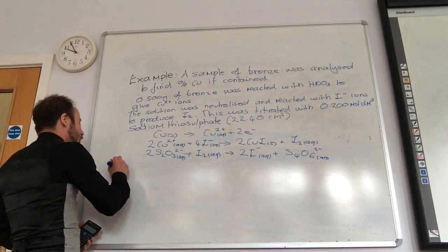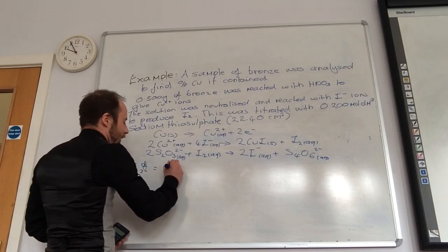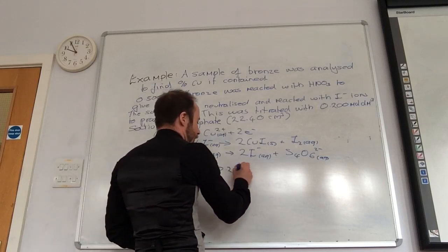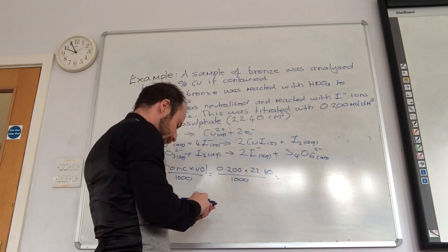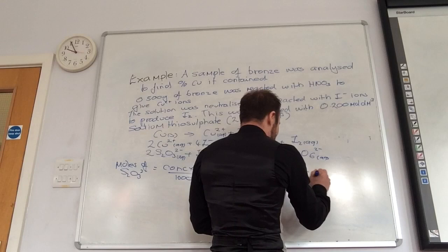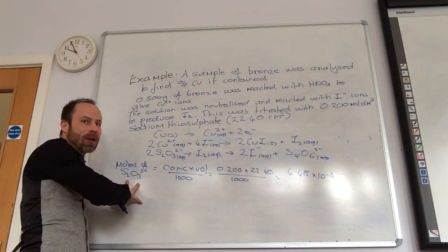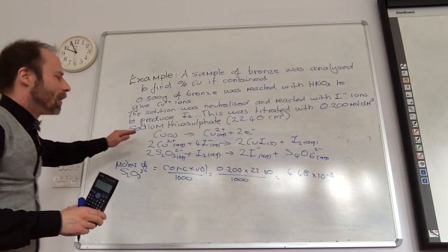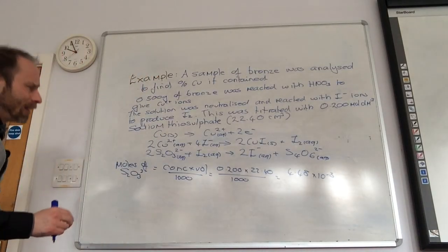Moles of sodium thiosulfate. Moles of S2O3 2 minus, concentration times volume over 1,000, 0.200 times 22.40 over 1,000. And that gives me 4.48 times 10 to the minus 3. Moles of I2 is how much of that? Moles of S2O3 2 minus at the moment. Now I need to relate them. What do I want to find out? I want to find out how much copper. So you want to relate it to it now? So I've got to relate it now. So I'll just let you finish so everybody's ready for me to relate. It gets a little bit confusing.